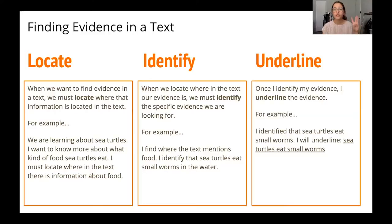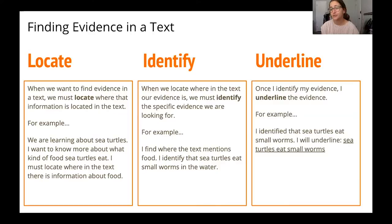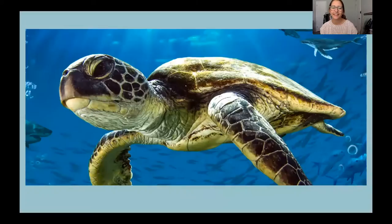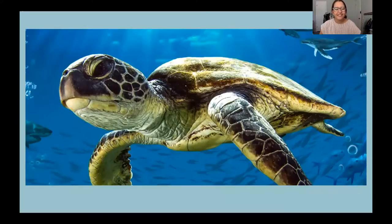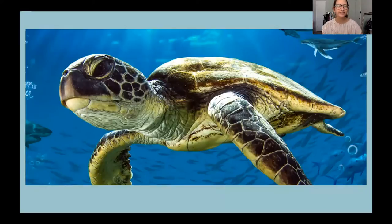So those are our three steps: locate, identify, and underline. Are you ready to give this a try? Once we get started and actually read our text and look for the questions, I think it'll make a little bit more sense. You might have guessed it — our first text is on sea turtles. I thought sea turtles would be a fun place to start since I got to show you the turtles I have at home. Let's go ahead and read about sea turtles in the wild.